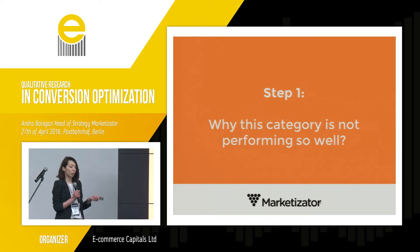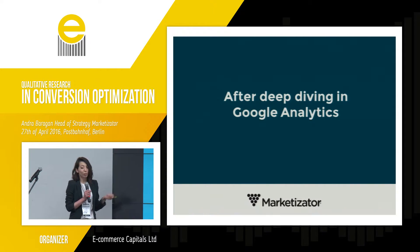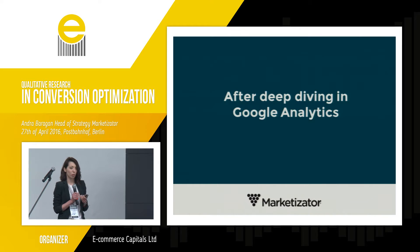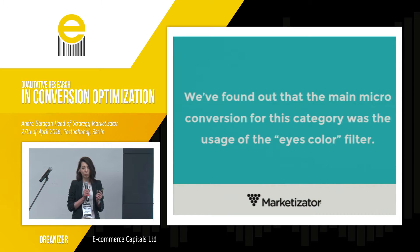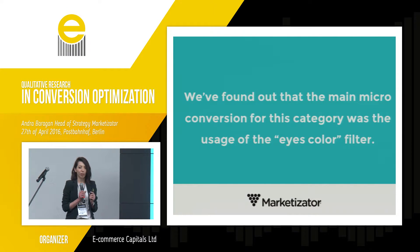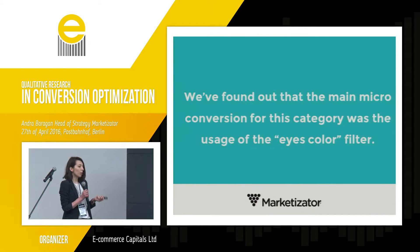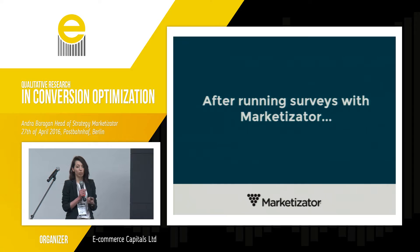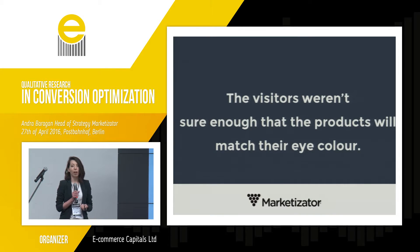How did we do this? Through qualitative and quantitative research. We had a deep dive into Google Analytics and saw what the issues were there. We found out that what helped visitors buy more on the product page was using the eye color filter. We combined this with running surveys through our platform, Marketisator, and found out that their main anxiety was whether the makeup products would match their eye color.